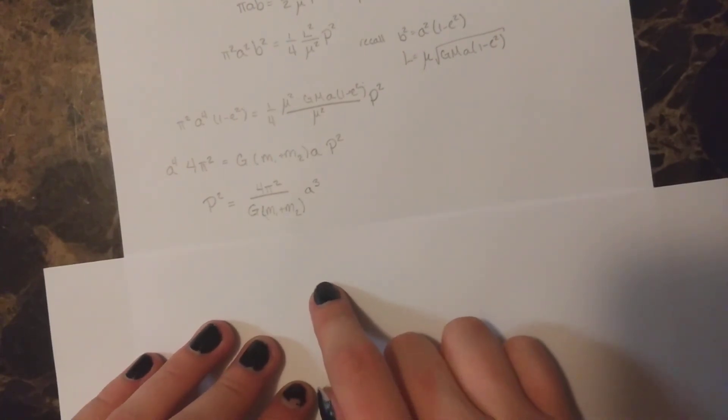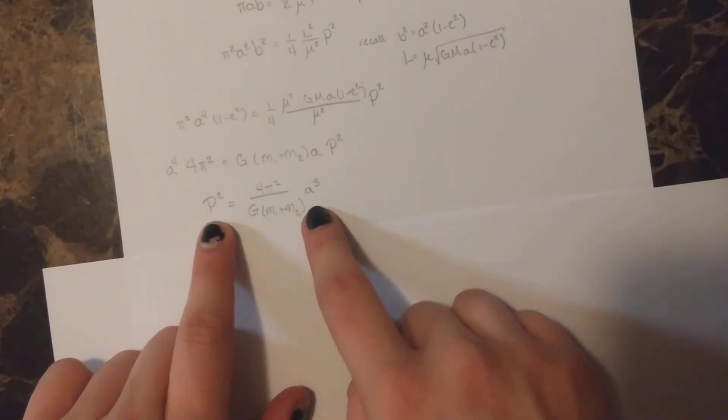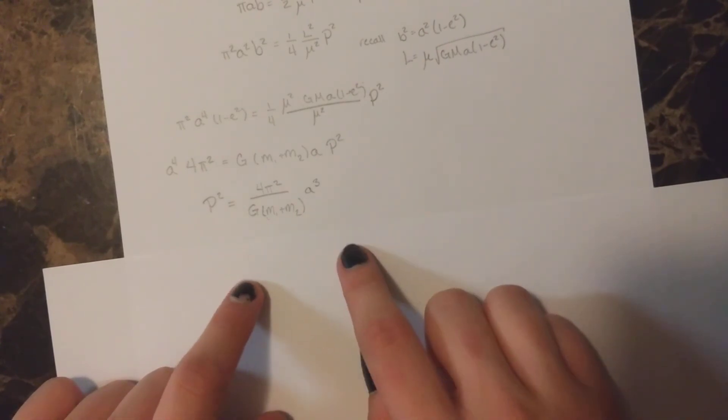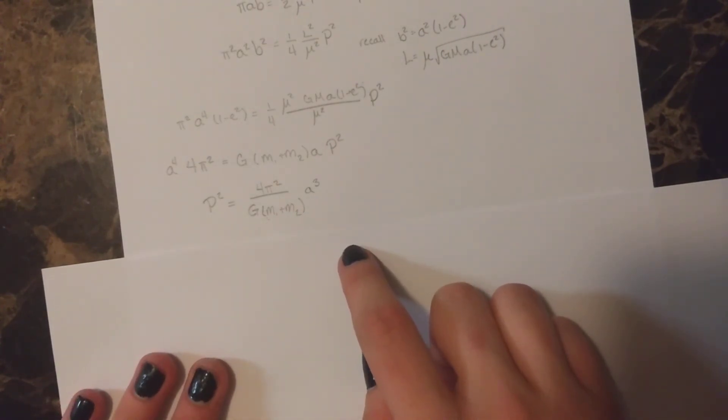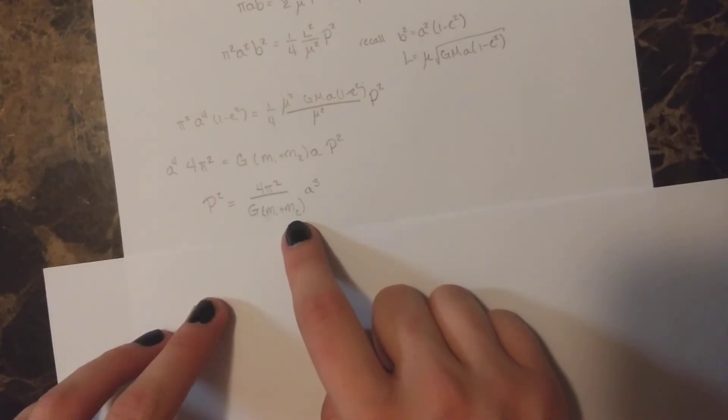That is, that the period of a planet is related to the semi-major axis through this way. And we can also see that we can find out the masses of the two objects from using this law.